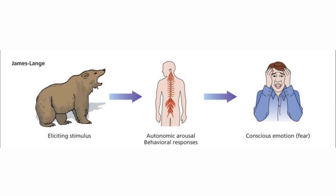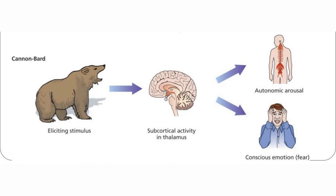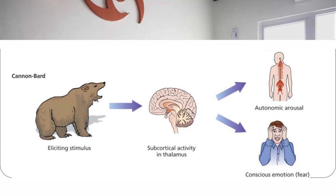In Cannon-Bard theory, when people see a fearful object, it triggers a response in the brain, and then the brain sends a signal to human behavior and physical responses at the same time. So in Cannon-Bard theory, the physiological responses and conscious emotional processing happen simultaneously.